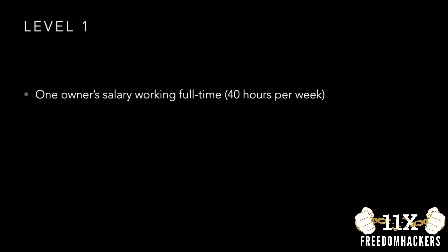Level one: one owner's salary working full time — meaning 40 hours per week. The reason there's a time limit is that if, say, there are five owners all working full time at 40 hours per week, that's quite a lot of work and it raises a warning sign. That's why the 40-hours-per-week limit exists.